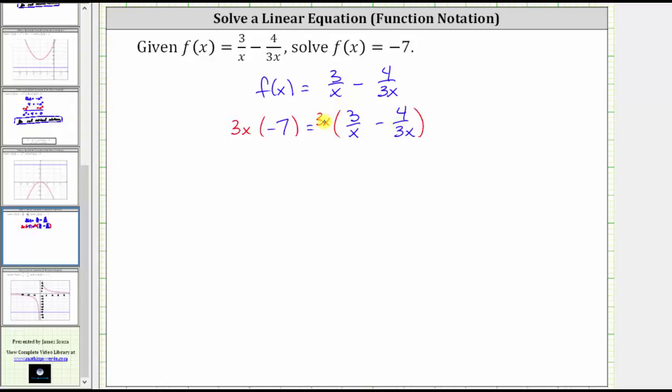On the right side, let's show the distribution of the 3x. So on the left, we have 3x times -7 equals 3x times 3/x. Let's write that as (3x/1) times (3/x). And then minus, we have 3x times 4/(3x), or (3x/1) times (4/3x).